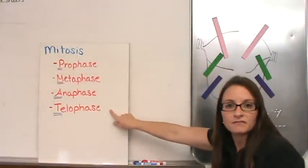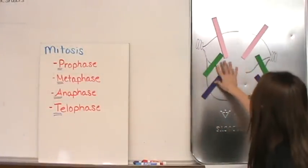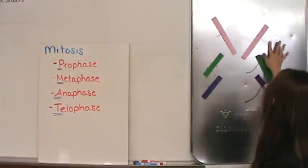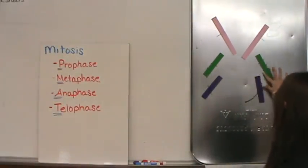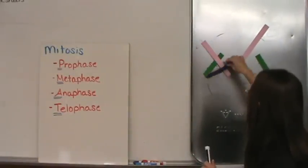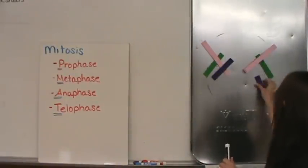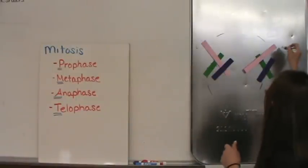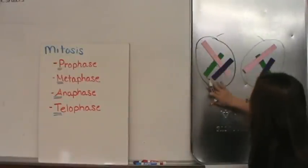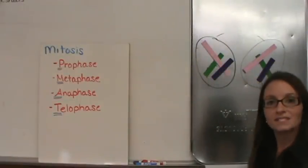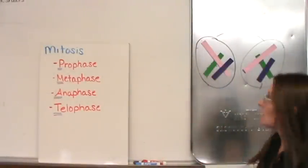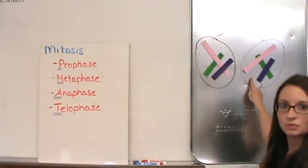Finally, during telophase, you get the single cell, all the spindles are going to dissolve, and you're going to get a nucleus that is going to form around each of these. Now we're currently in a single cell. We're still within a single cell, but we have a single cell with two nuclei now.